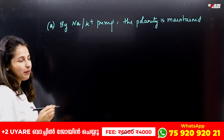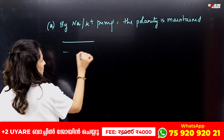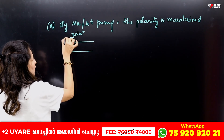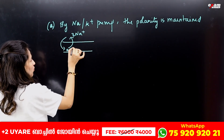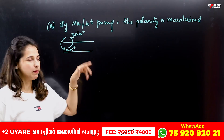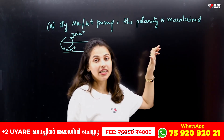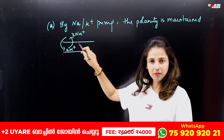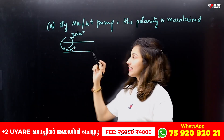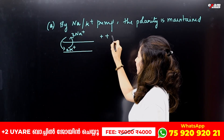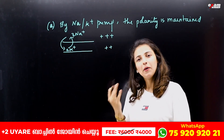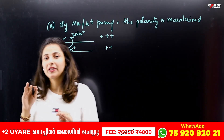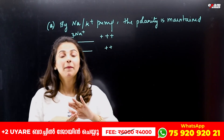The sodium-potassium pump works across the axon membrane: 3 Na+ ions are pumped out, and 2 K+ ions are pumped in. Because we take out 3 positive ions and only bring in 2, there is a net positive charge outside. This is how the sodium-potassium pump maintains polarity.